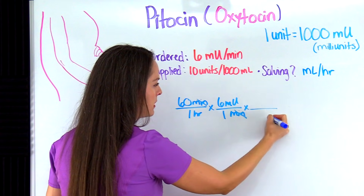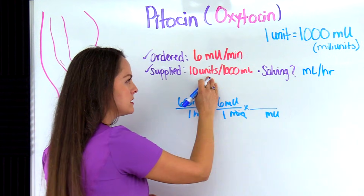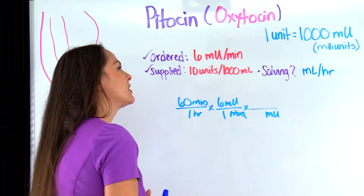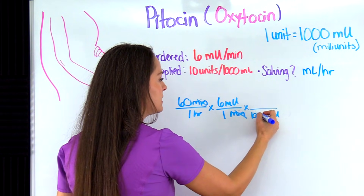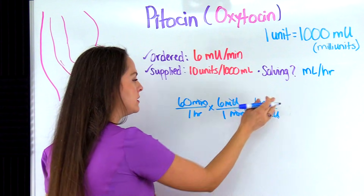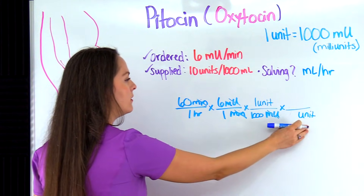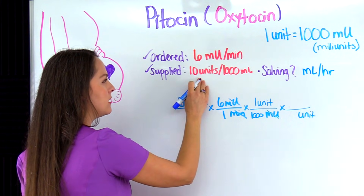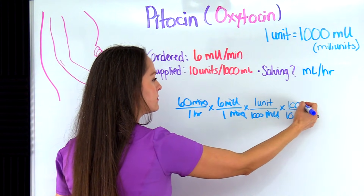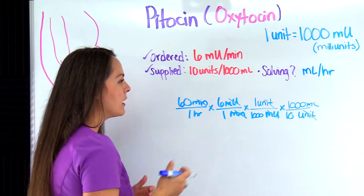Now I multiply again and bring milliunits down. I need to convert milliunits to units since that's what's supplied. From our memorized conversion, there are a thousand milliunits in one unit — this cancels out milliunits, leaving units per hour. I multiply again, bring unit down, and plug in what I'm supplied with: 10 units is equivalent to 1,000 milliliters. This cancels out units, and I'm left with milliliters per hour — exactly where I need to be.